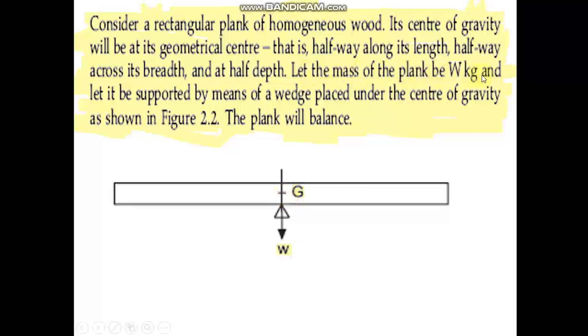Let the mass of this object be W kilograms and let it be supported by means of a wedge. You can see here this is a rectangular wedge placed under the CG as shown in the figure. Because the object is balanced at its centre of gravity, the plank will balance uniformly.